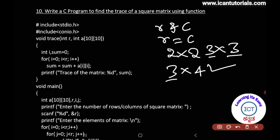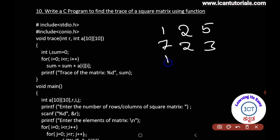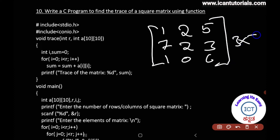In a non-square matrix, the rows and columns are not equal. For example, consider this 3x3 matrix: 1, 2, 5, 7, 2, 3, 1, 0, 6. The number of rows is equal to the number of columns — this is a 3x3 square matrix.